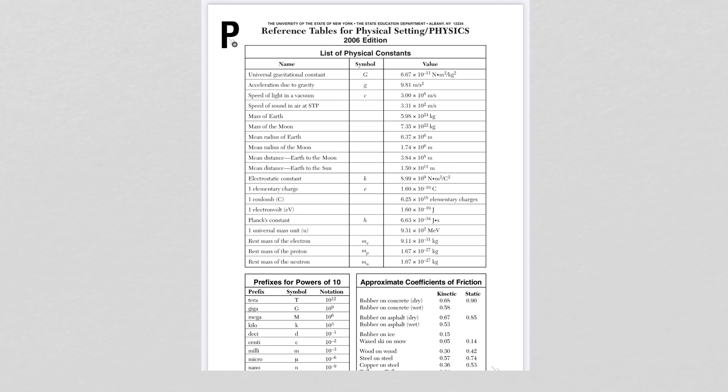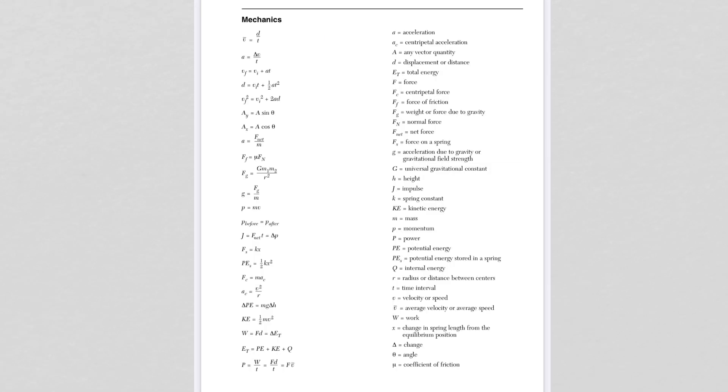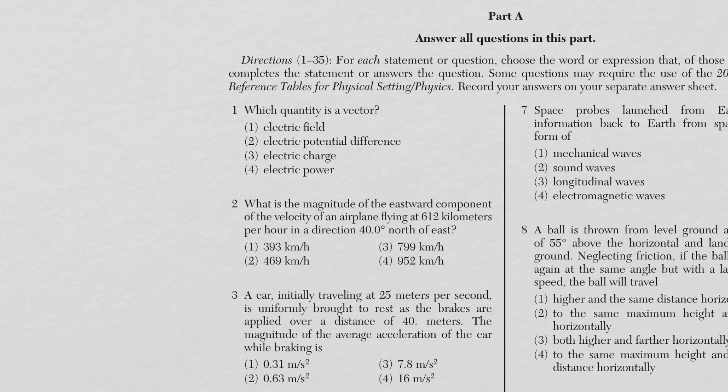Here is the front page of the physics reference tables — you see a lot of constants that we may or may not be using for mechanics. The big page is the back page of the reference table, where all your mechanics equations are listed, with a few more that may pop up as we go through these questions. Before we get started, I highly recommend you have a calculator, your reference tables, and a pen and paper. Please don't do these in your head — that's a big mistake in my opinion. With that, let's check out question one.